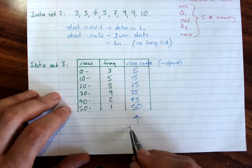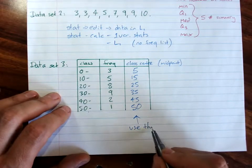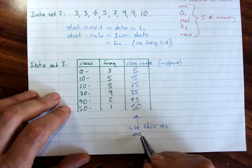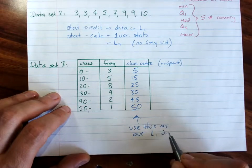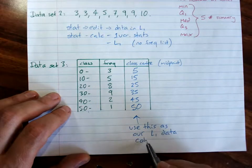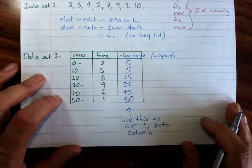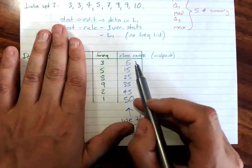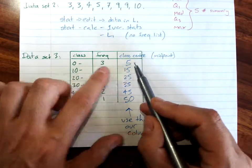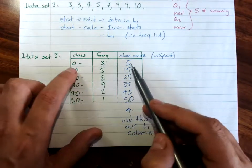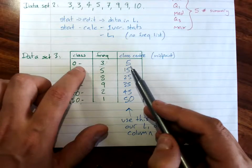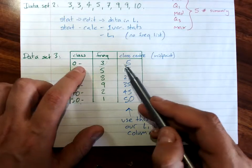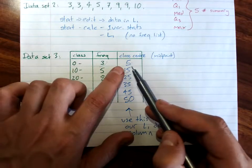And we use this as our score. Because we can't calculate with a range, so we've got to just assume that every mark in this group, every one of these, is a 5. Actually, it could be anywhere from 0 to 9.9, but we'll just have to take the best average we've got.